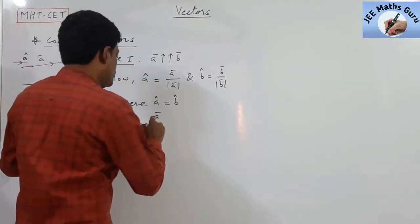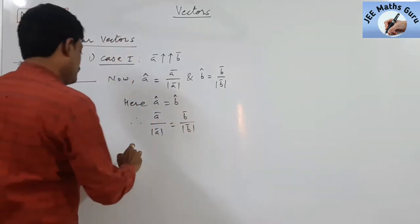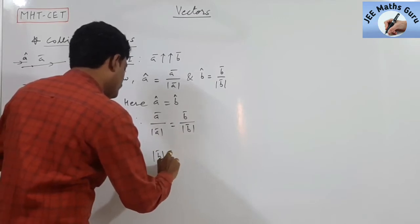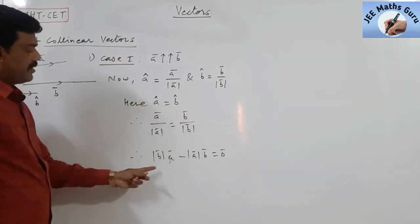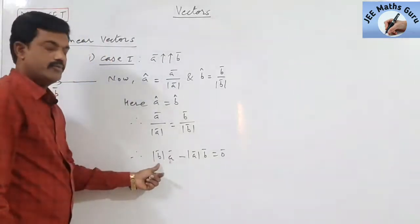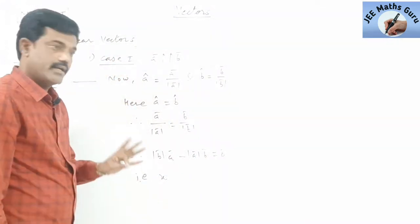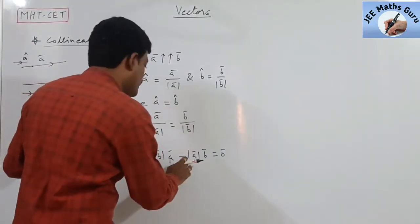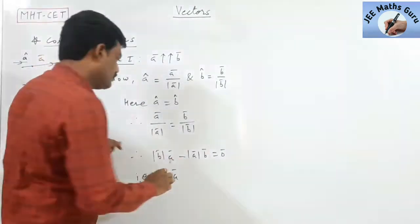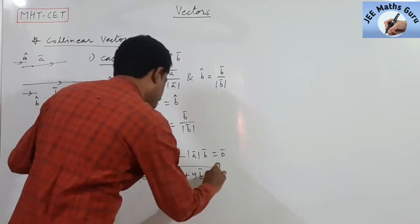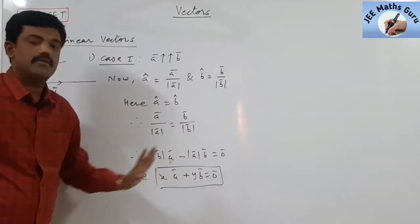Since A-cap equals A-vector over mod A, and B-cap equals B-vector over mod B, we can write: mod B times A-vector minus mod A times B-vector equals zero vector. Using scalars X and Y for the magnitudes, this gives us the relation XA plus YB equal to zero.